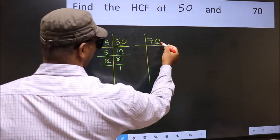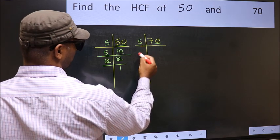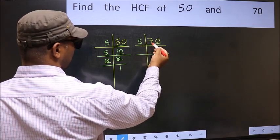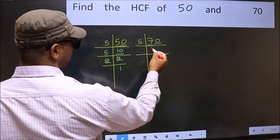Now the other number. Last digit is 0, so take 5. First number 7. A number close to 7 in 5 table is 5 times 1 is 5.